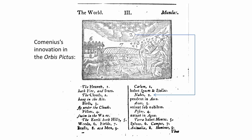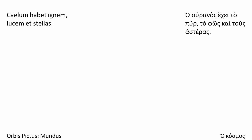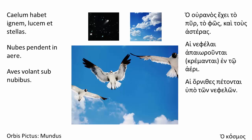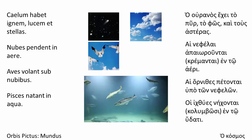Or take, for example, the pictures in the Orbis Pictus. The reason the Orbis Pictus is Pictus is because — and this was a genuine innovation on his part — Comenius accompanied the text with engraved pictures, with numbers cross-referencing the objects in the picture with the words in the text. But we've got the internet, so here's what we've done instead. And I'll just read the Latin: Caelum habet ignem, lucem, et stellas. Nubes pendent in aere. Aves volant sub nubibus. Pisces natant in aqua.